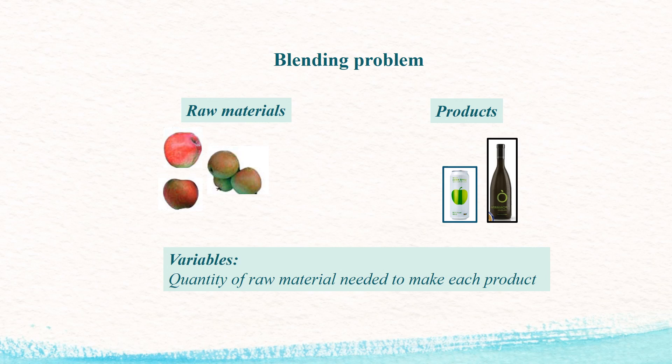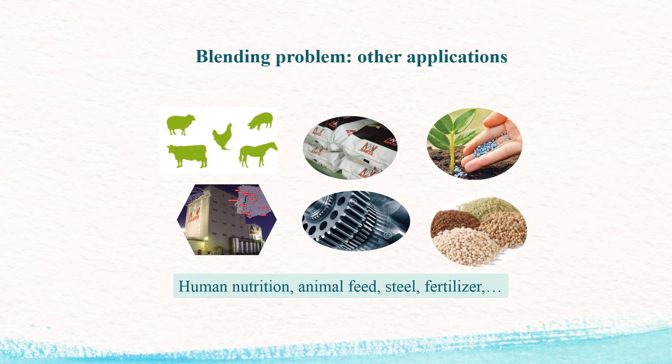Finally, this model is an example of how to solve a blending problem. The goal is to find the best blend of raw materials to make a set of products which meet some specification. The variables are the quantities of raw materials needed to make each product. If the characteristics of the products are proportional to those of the raw materials, we can optimize cost or other objectives by formulating linear programming models. Blending problems have many applications, such as diet problems in human nutrition, animal feed, and the steel and fertilizer industries.